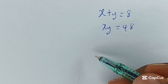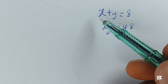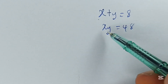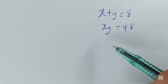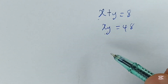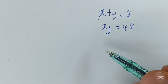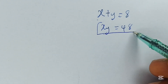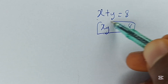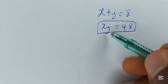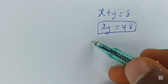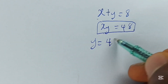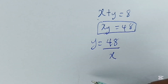Let's solve this equation together. It says x plus y is equal to 8 and xy is equal to 48. So how do we solve this? First, we make x or y the subject of the formula. So let's make y the subject, giving us y is equal to 48 over x.